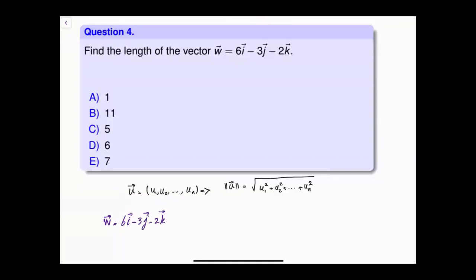The coefficient of i, which is 6, goes to the first component. The coefficient of j, which is -3, is for the second component. The coefficient of k, which is -2, is for the third component. Okay.